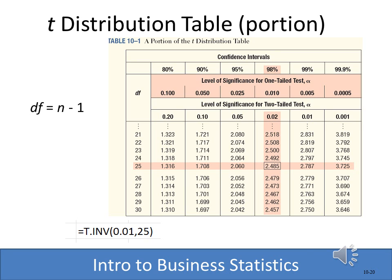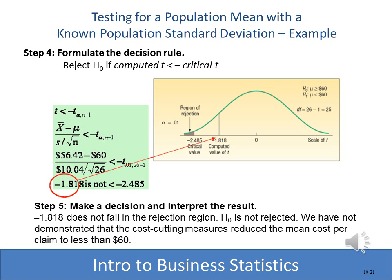Excel commands are also shown at the bottom of the slide. We then compute the test statistic: t equals x-bar minus mu, divided by the sample standard deviation divided by the square root of n. With this example, we end up with a t of negative 1.18. Since negative 1.18 is not more negative than negative 2.485, we are not going to reject the null hypothesis.